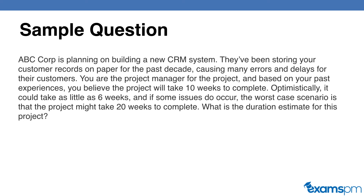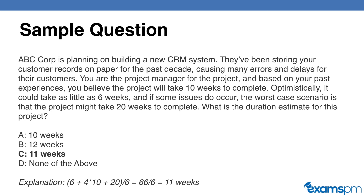If you said C, you are correct. You will use the PERT estimation here because of two giveaways. First, the question doesn't say to use triangular distribution. Second, it said that based on your past experiences you believe the project will take 10 weeks — this tells you similar projects have been done before, hinting that beta distribution is more appropriate. So you do: six (optimistic) plus four times 10 (most likely) plus 20 (pessimistic), divided by six. That gives you 66 divided by six, which equals 11 weeks. So your duration estimate for this project is 11 weeks.